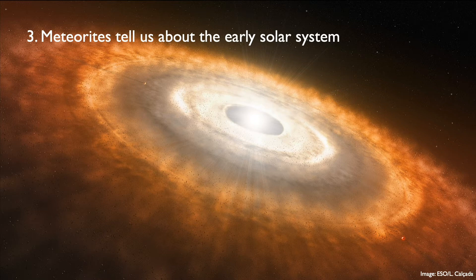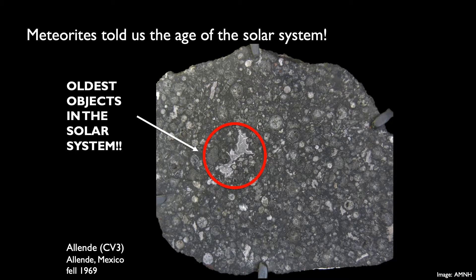Meteorites range from the primary condensed solids in the solar system to pieces of fully formed planets, spanning the period of planetary formation. One of the most important things we've learned from meteorites is the age of the solar system. Certain inclusions inside chondritic meteorites — such as the one circled here — are actually the oldest objects in the solar system, the first solid things to form after the Sun. Scientists have used isotopic dating to calculate how old our solar system is.